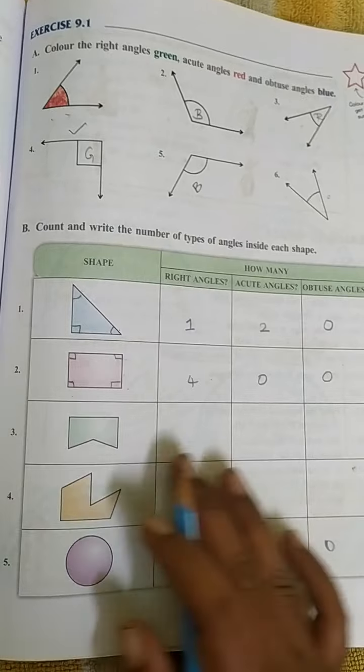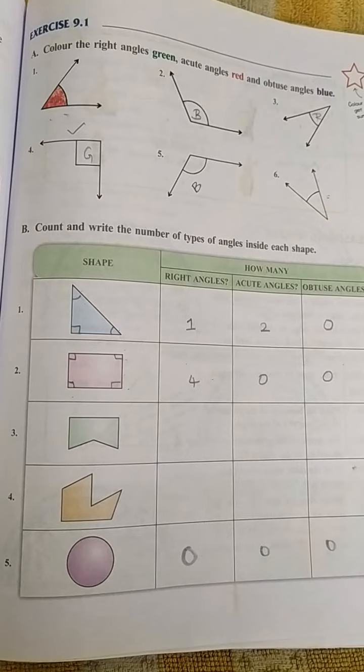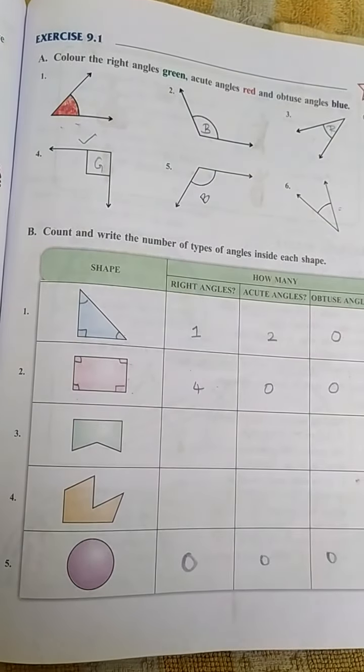So with this our class is over. You are going to learn the types of angles and the basic concepts of geometry. You are going to do this exercise 9.1a problem. Thank you students.